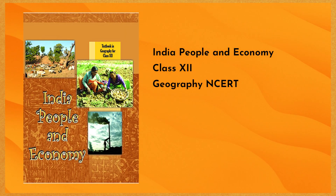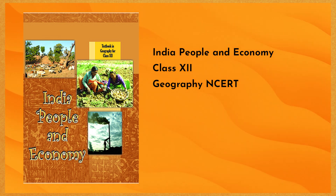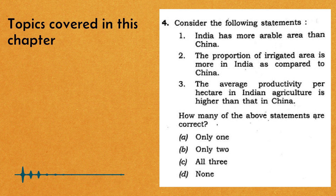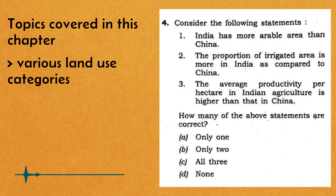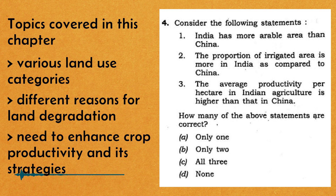Is specific question se most closely related knowledge aapko milegi is chapter mein, jahan agricultural land use in India ki baat ki gayi hai. Is chapter se aapko idea milega ki alag-alag land use ki categories kya hain, land degradation ke kya-kya alag reasons hain, India mein crop productivity ko badhane ki kya zaroorat hai, aur uski kya alag-alag strategies hain.